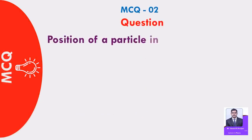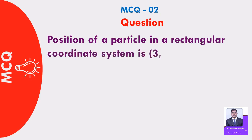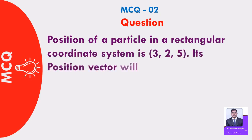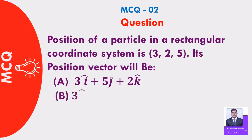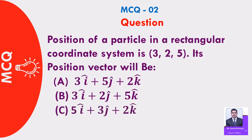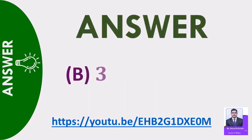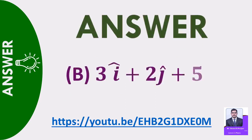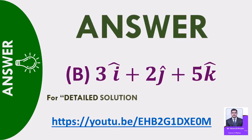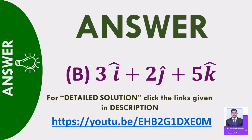MCQ 2: Position of a particle in a rectangular coordinate system is (3, 2, 5). Its position vector will be: A) 3i cap plus 5j cap plus 2k cap, B) 3i cap plus 2j cap plus 5k cap, C) 5i cap plus 3j cap plus 2k cap. Answer: B — 3i cap plus 2j cap plus 5k cap. For detailed solution, click the links given in description.